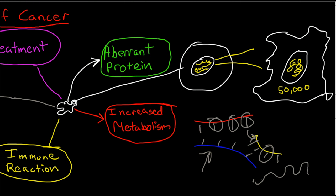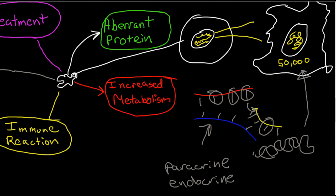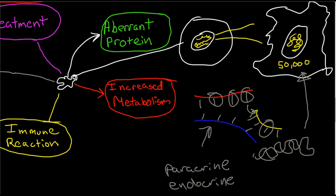If you have significant mutations in the DNA, you are going to end up with aberrant proteins. Proteins have structural components, which explains why mutated cancerous cells start to have a funky appearance over time. Most importantly, proteins have a very important role in signaling and communication throughout the body via paracrine and endocrine functions. So we have aberrant proteins secreted by tumors creating strange issues with signaling all around the body.